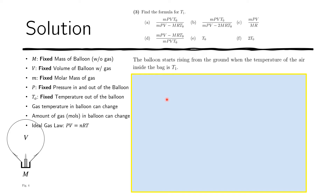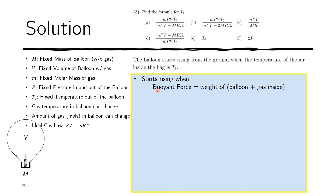The next part of the problem states the balloon starts rising from the ground when the temperature of the air inside the bag is T₁. We need to find T₁. The balloon starts rising when all upward forces equal all downward forces. The only upward force is the buoyant force computed in the previous question. The downward forces are the weight of the balloon itself (M·g, excluding air) plus the weight of the gas inside the balloon.